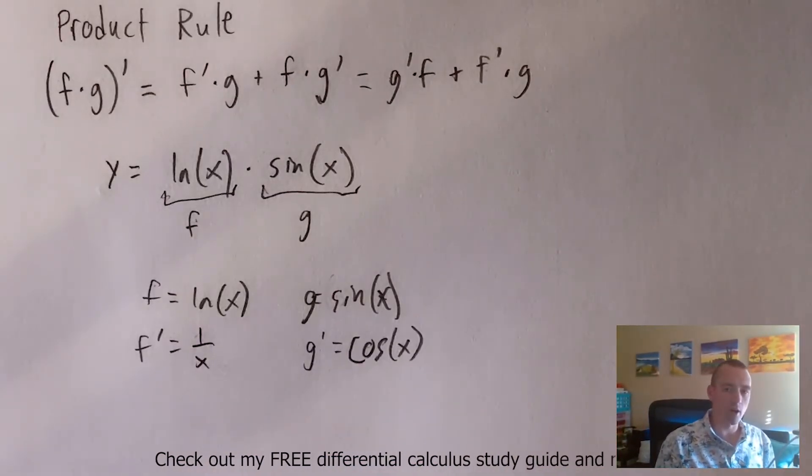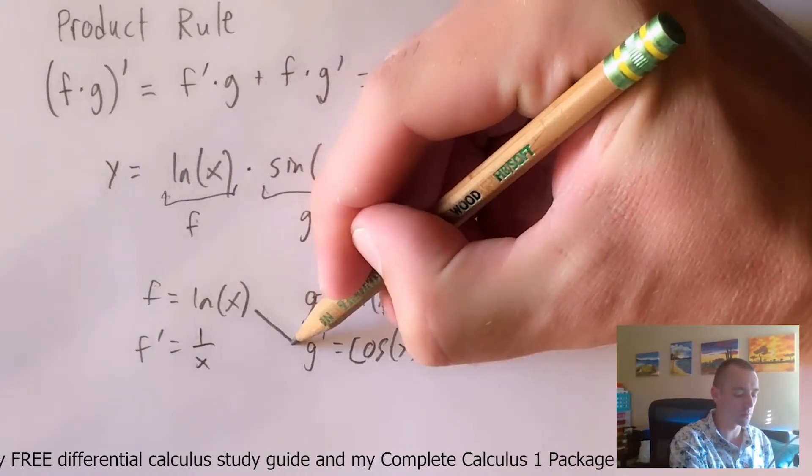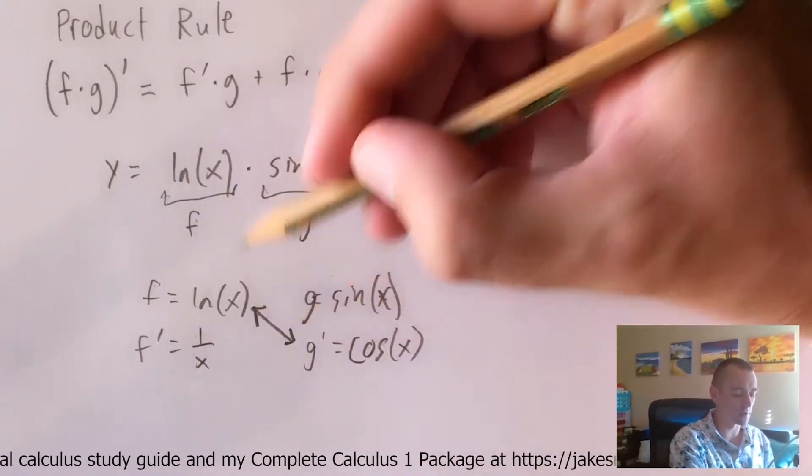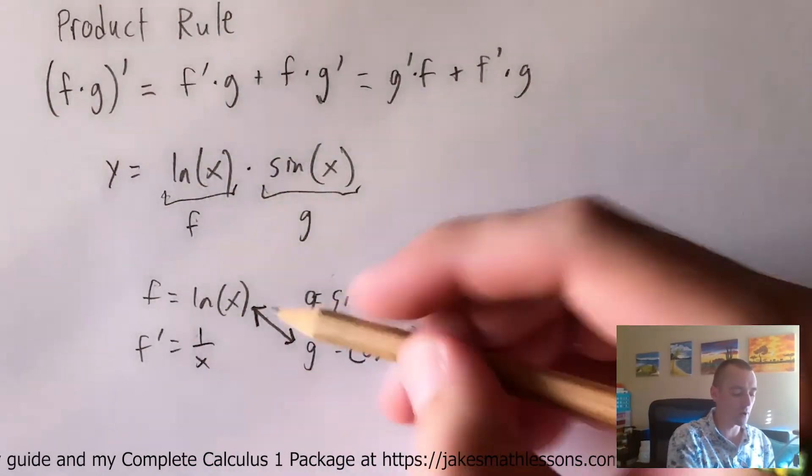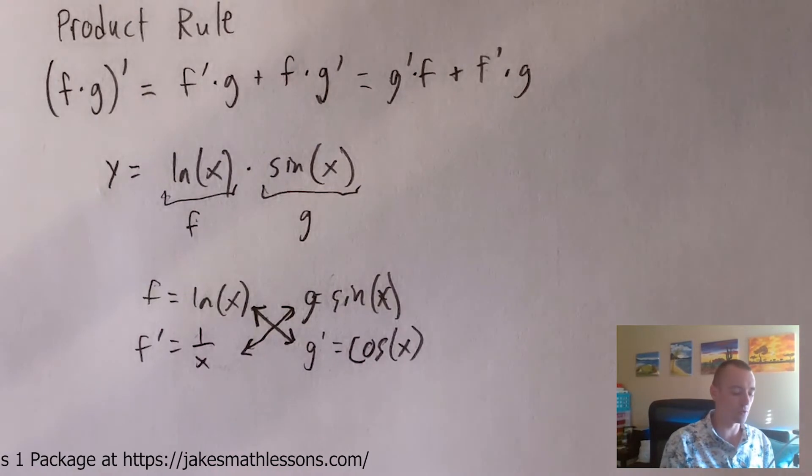So once you've figured out your f prime, your g prime, all you have to do is think about multiplying the diagonals of these two things. So multiply f times g prime, multiply f prime times g, and then add those two things up.